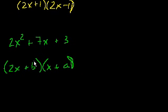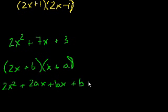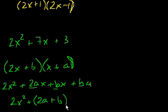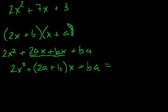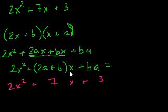Let's multiply it out more systematically. 2x times x is 2x squared, 2x times a is 2ax, b times x is bx, b times a is ba. You get 2x squared, and I merge these terms, plus (2a + b)x plus ba. This equals 2x squared plus 7x plus 3.